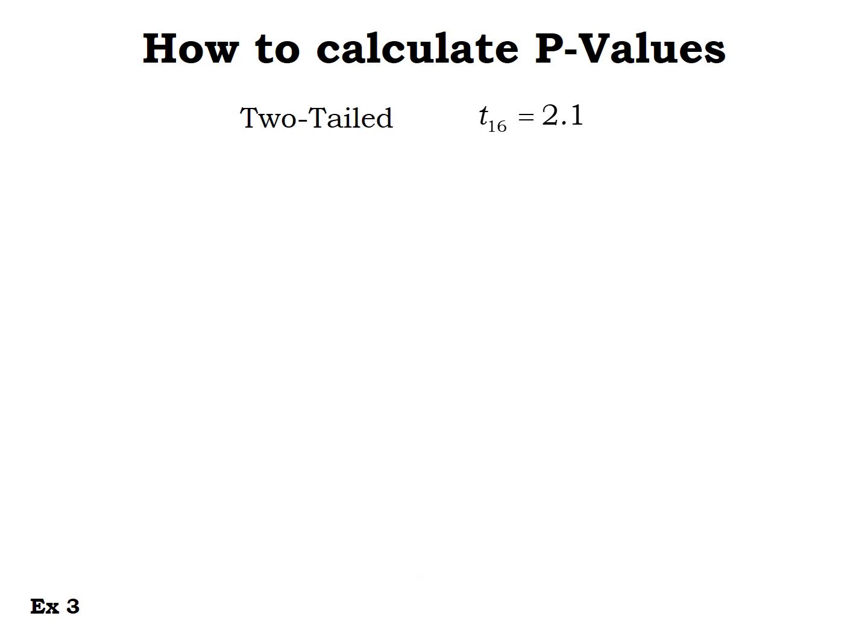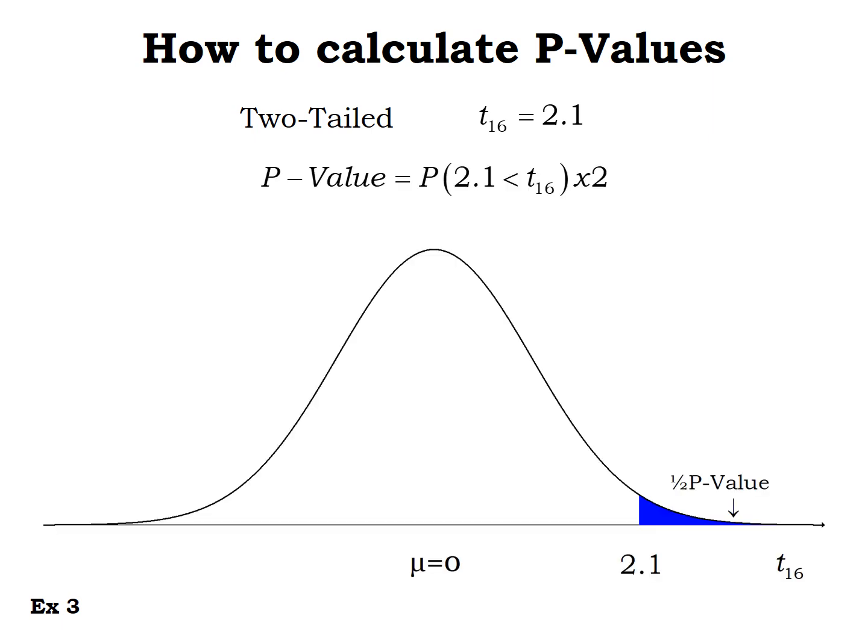For the two-tailed test with the same test statistic, we look at the graph. The test statistic is in the right tail, so the p-value is two times the area to the right. We take the area to the right that we already found, multiply it by two, and for a two-tailed test with 16 degrees of freedom in a t-distribution, the p-value is 0.0520.